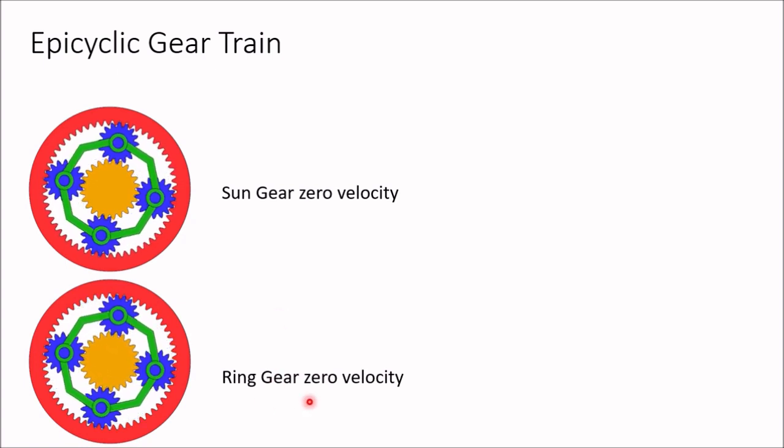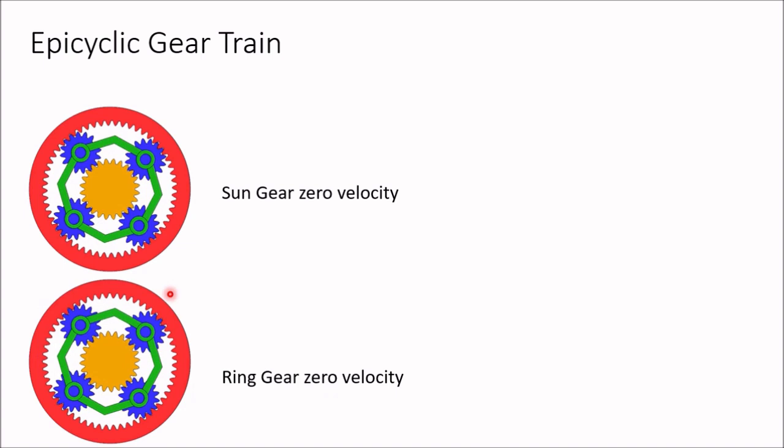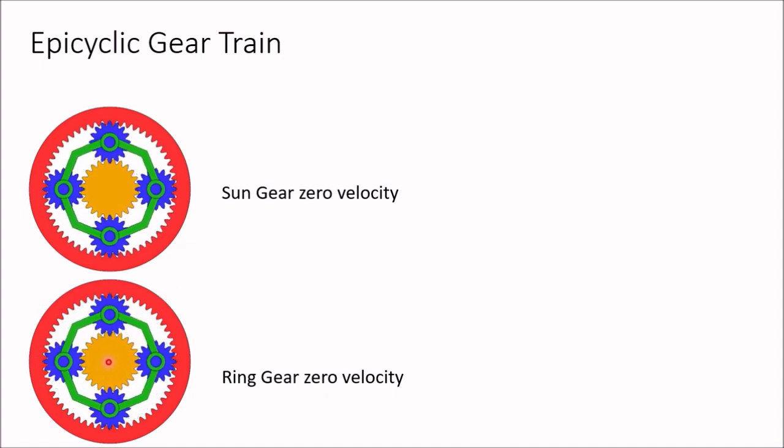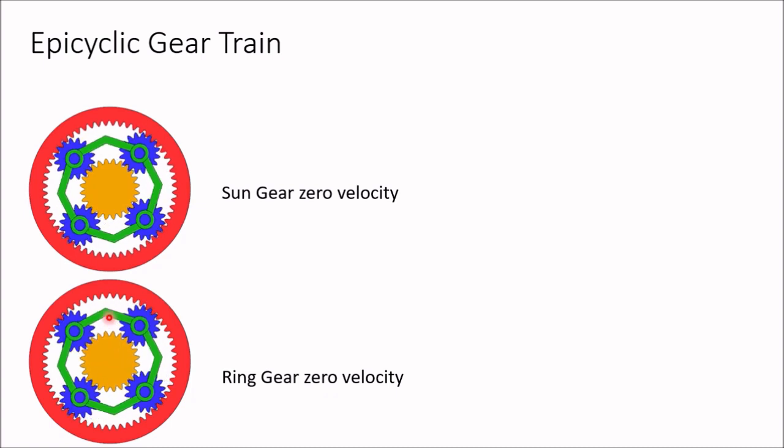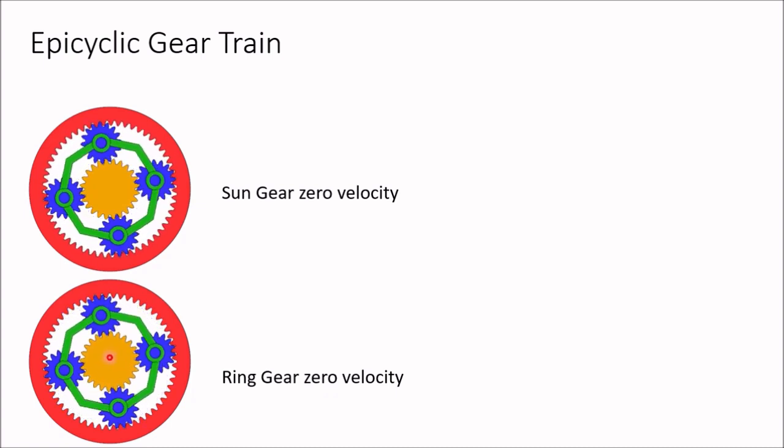In one particular case, the sun gear is given zero velocity — that means the sun gear is kept fixed. The arm (shown in green) and the ring gear (shown in red) become the input and output. You can give input to the arm and get output at the ring gear, or vice versa — give input to the ring gear and get output at the arm. Another arrangement is where the ring gear has zero velocity, meaning the ring gear is fixed.